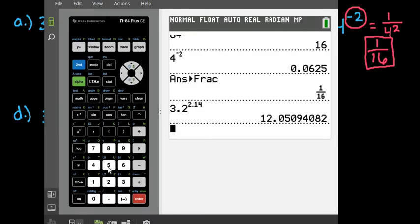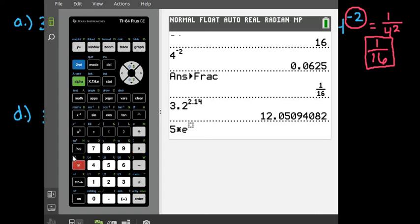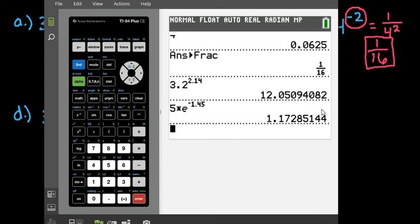So all you would have to do for this one is just do 5 times. For this calculator to find E, you would just do 2nd natural log, and you can see that it's E to the x power up here. And so we would do 5 times E to the negative 1.45, and you would hit enter.